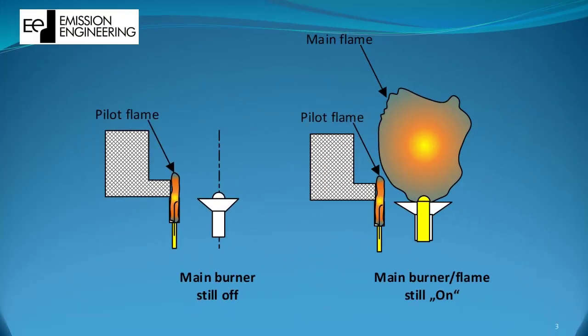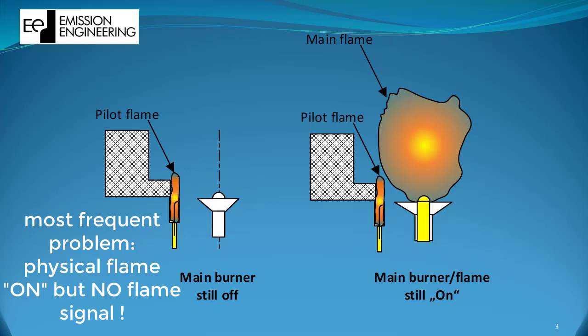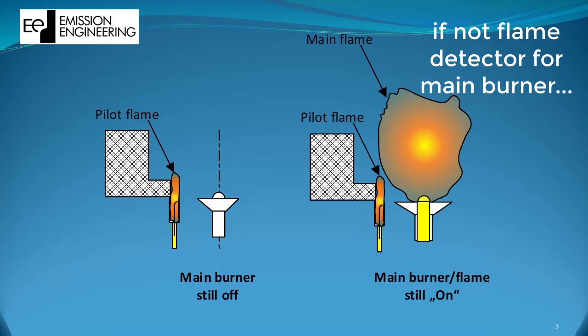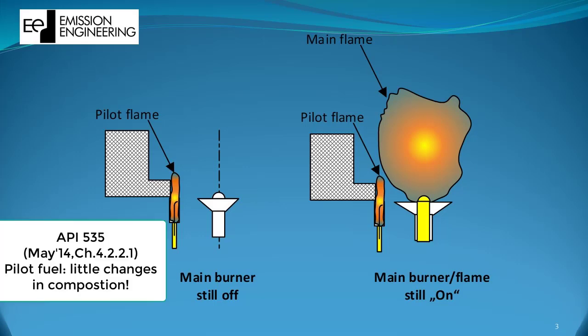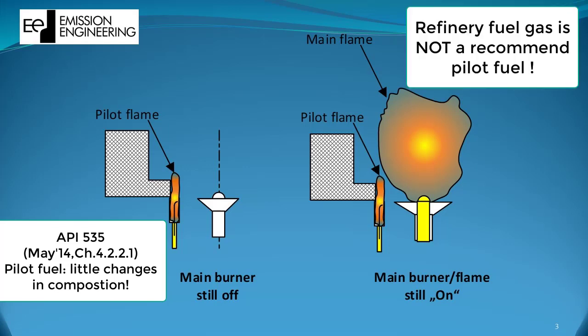There are several issues with pilots that can make trouble. Either it is a fail of the pilot flame signal or it is a lack of correct main flame supervision. However, keep in mind the recommended fuel for pilots as per API 535 May 14 is a fuel that varies little in composition like natural gas or propane. A refinery fuel gas with considerable change in hydrogen content is definitely not the preferred fuel, and many flame detection issues are caused by changes in fuel composition.